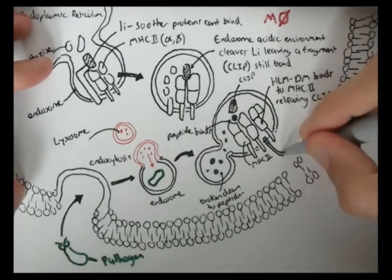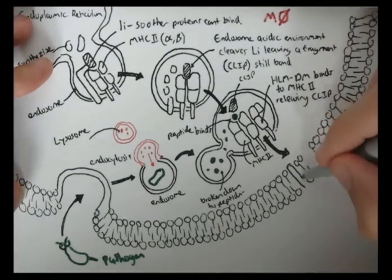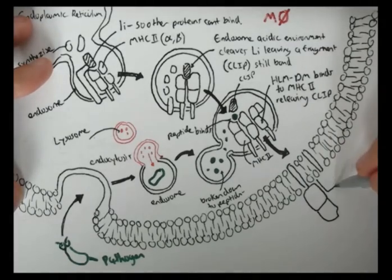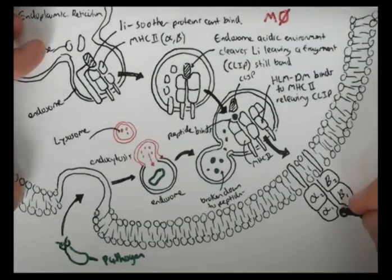Now because MHC class 2 molecule with its specific antigen already bound, it then is fused with the cell membrane. Now this antigen-presenting cell, in this case a macrophage, is now presenting its antigen and it will present it to T helper cells.